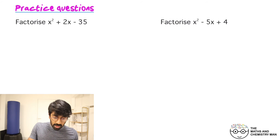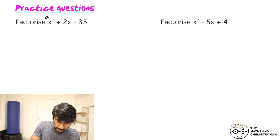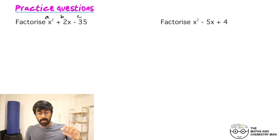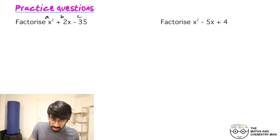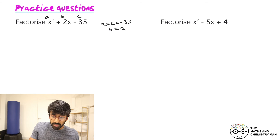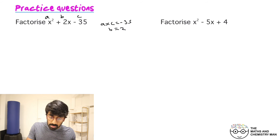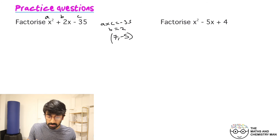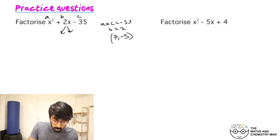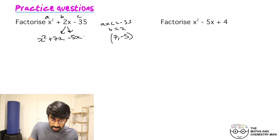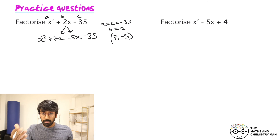Right, let's go. First one: a is 1, b is 2, c is minus 35 — wait, a times c gives minus 35, and b is 2. We need numbers that multiply to minus 35 and add to 2. That's going to be 7 and minus 5. So split the middle term: x squared plus 7x minus 5x minus 35.